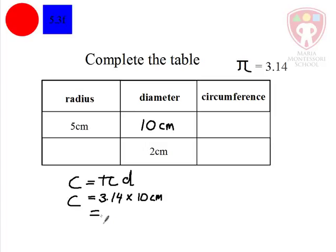Multiplying by 10 is very easy for us. 31.4 centimeters. That's the answer here. So we can write here 31.4. Make sure you write centimeters. If you leave it out, you'll be throwing away your marks.